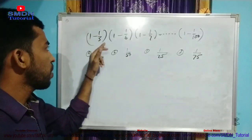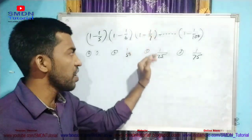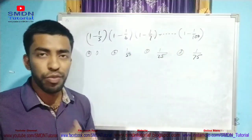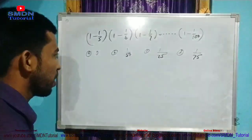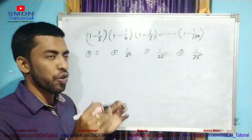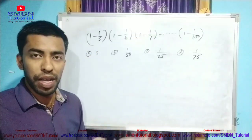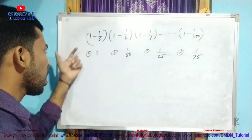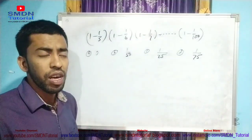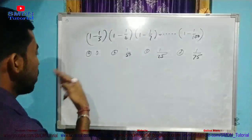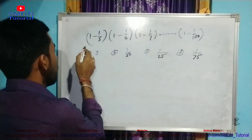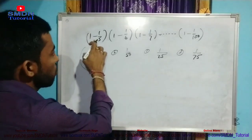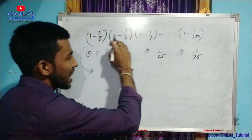The series is: 1 minus 1 by 5, 1 minus 1 by 6, 1 minus 1 by 7, dot dot dot, 1 minus 1 by 100. So that's the whole question — we have to answer these two questions within ten seconds. One minus 1 by 5, one minus 1 by 6 — which is the first question.